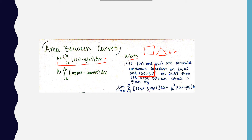So that means if you're looking on a graph, f(x) would be over g(x). You could also say that the area between two curves equals the integral from a to b of the upper function minus the lower function dx.